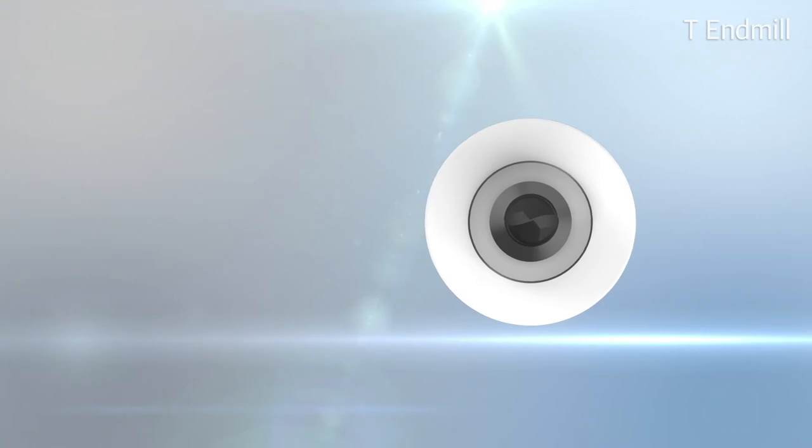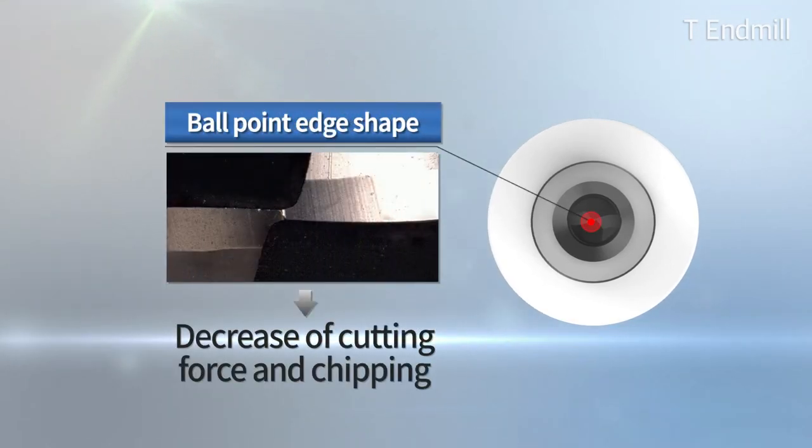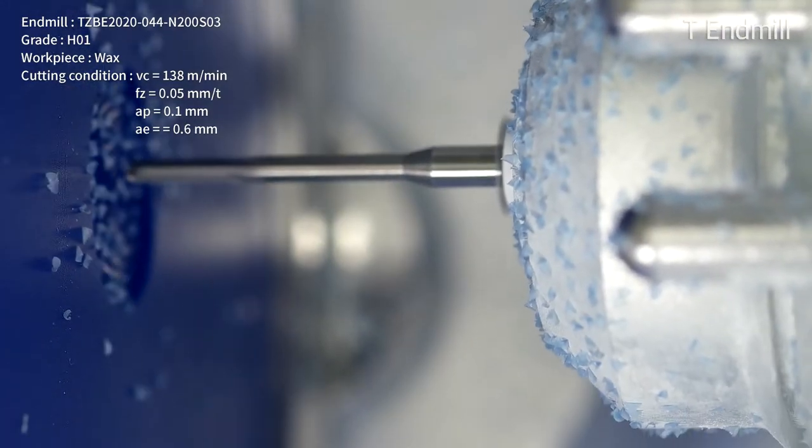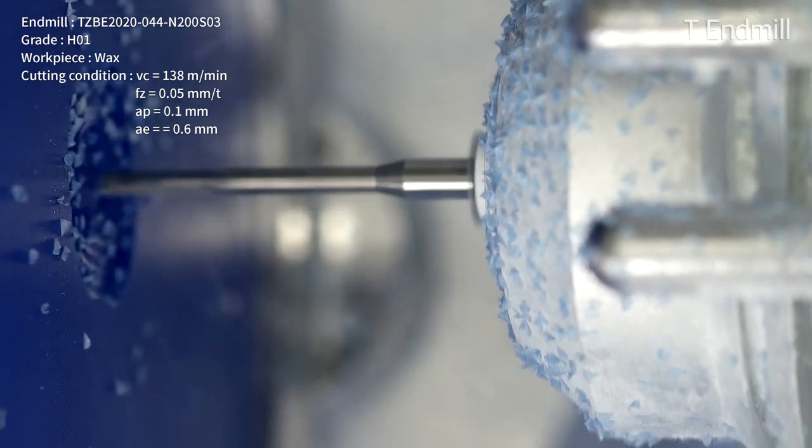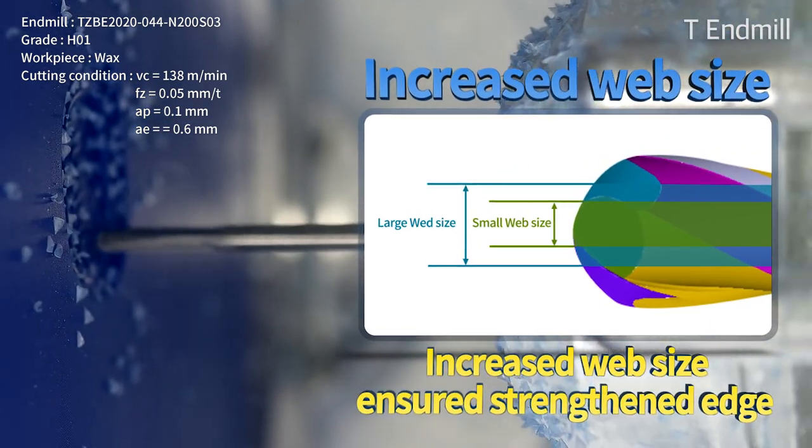T and Mill series also improved its tool life and workpiece's surface roughness with two factors: lessens cutting load with the implementation of a special ballpoint design and empowers its hardness with increase of web size.